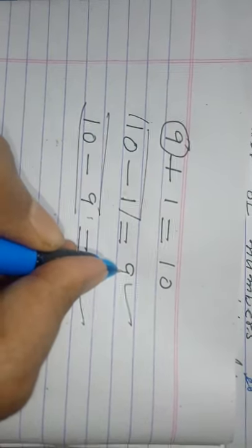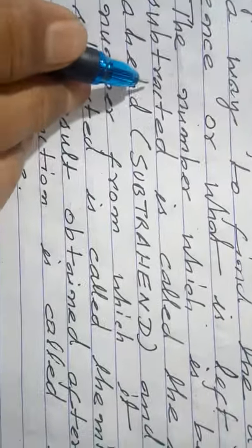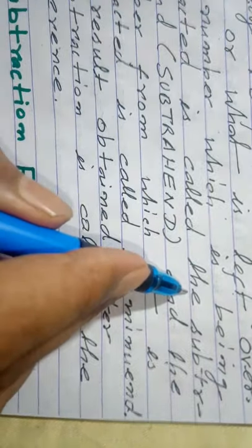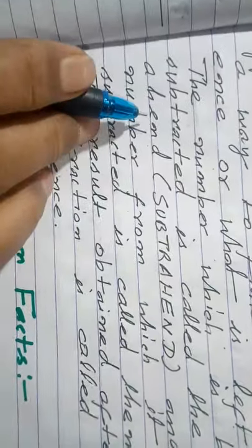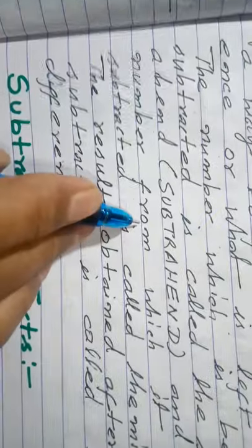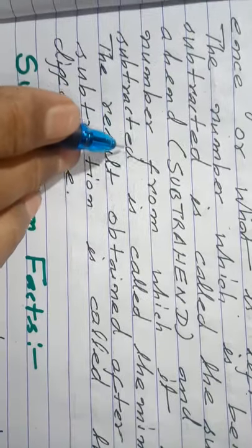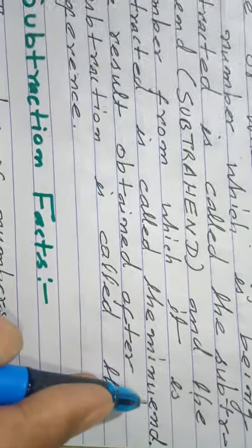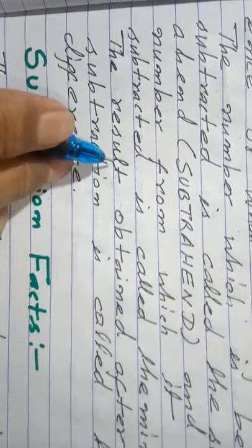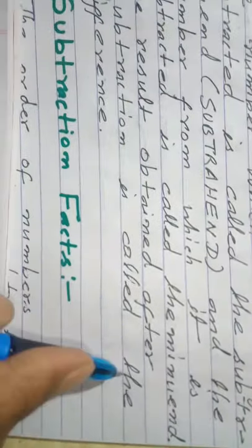10 minus 1 equal to 9. 9 is left over. The number which is being subtracted is called the subtrahend. And the number from which it is subtracted is called the minuend. The result obtained after subtraction is called the difference.